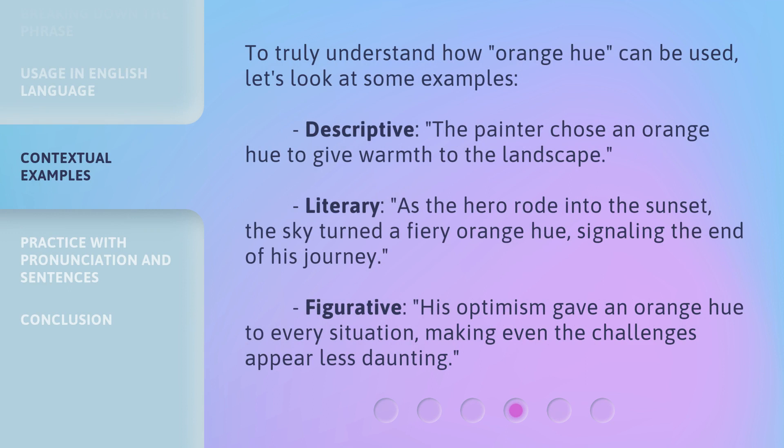To truly understand how 'Orange Hue' can be used, let's look at some examples. Descriptive: 'The painter chose an orange hue to give warmth to the landscape.' Literary: 'As the hero rode into the sunset, the sky turned a fiery orange hue, signaling the end of his journey.' Figurative: 'His optimism gave an orange hue to every situation, making even the challenges appear less daunting.'